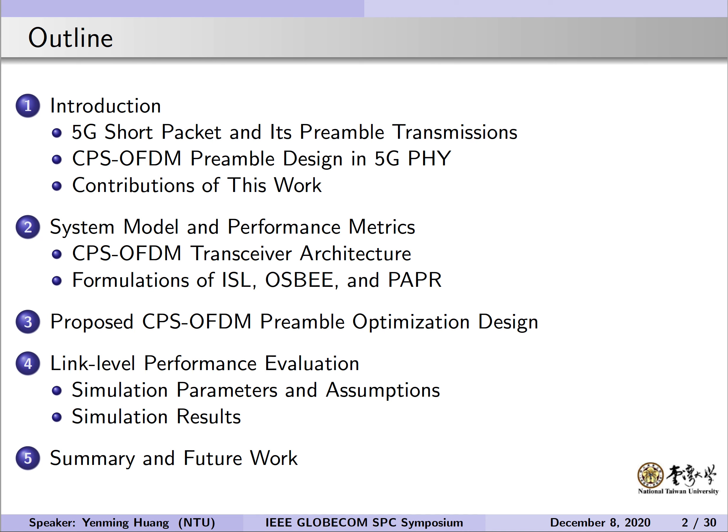In this talk, I will first introduce 5G short-packet scenarios and the preamble design requirements. From the viewpoint of physical layer communications, we intend to explore the optimal preamble of CPS-OFDM waveform, which features low out-of-subband emission (OSBE) and low peak-to-average power ratio (PAPR). In the second part, the CPS-OFDM transceiver system and performance metrics — integrated sidelobe level (ISL), OSBE energy, and PAPR — with respect to the preamble design are described. In the third part, we present the proposed CPS-OFDM preamble optimization design, including the mathematical problem formulation and algorithmic framework. Then in the fourth part, simulation results show the advantages of the proposed method. Finally, we summarize the conclusions of this work.